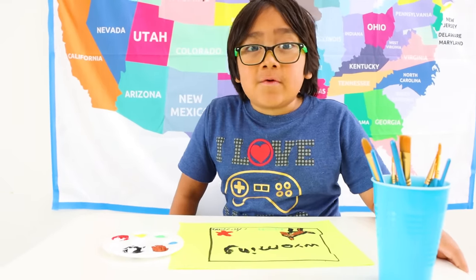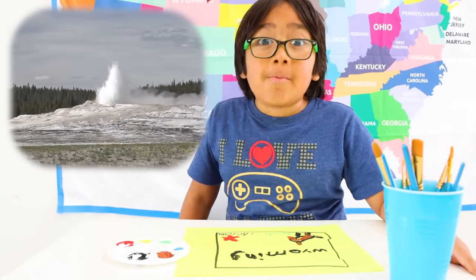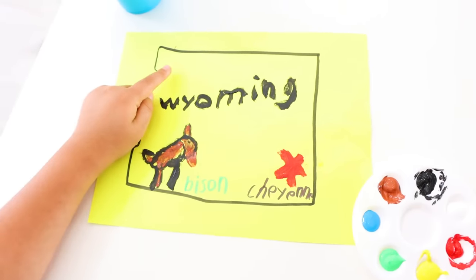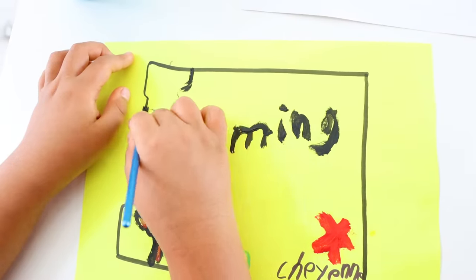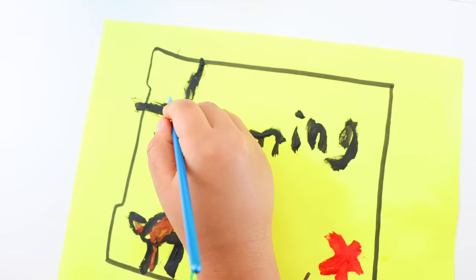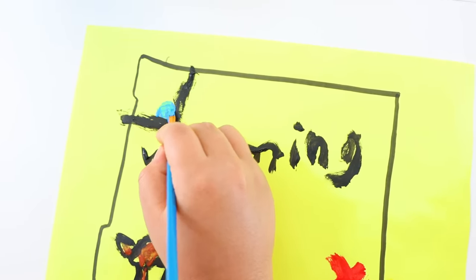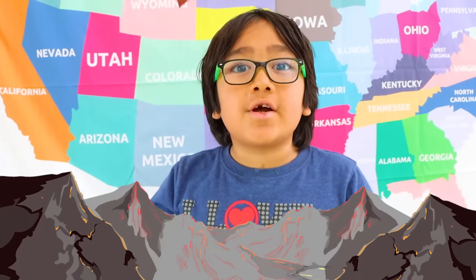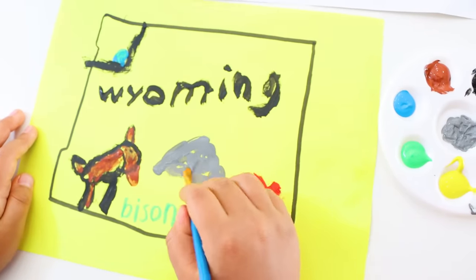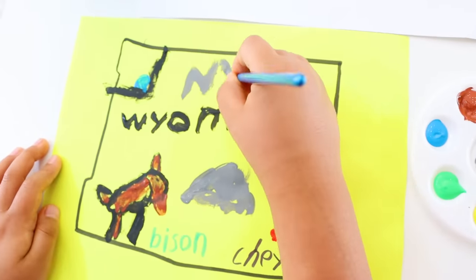Wyoming is famous for their Yellowstone National Park. Yellowstone Park is the first national park in the U.S., and it's located right here on the top left. Now I'm going to draw the Yellowstone National Park. First, I'm going to draw a lake — like that. Before I finish the geyser, I'm going to draw some mountains around Wyoming, like some mountains, like that.